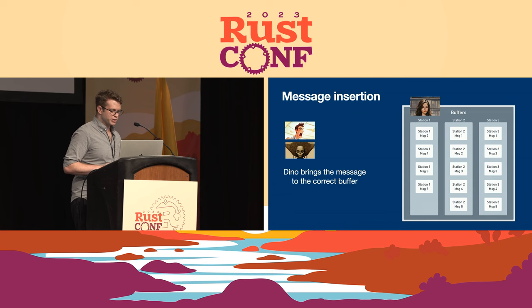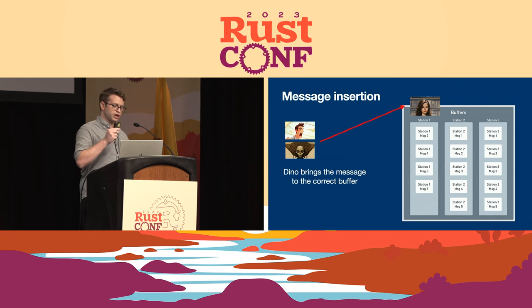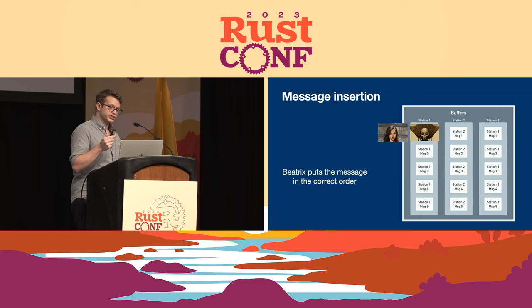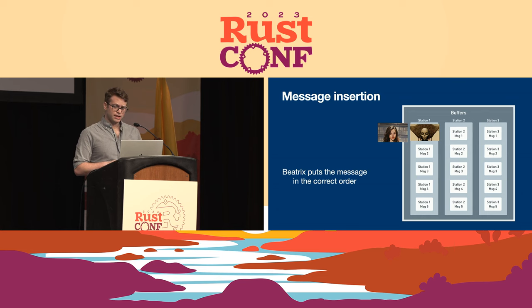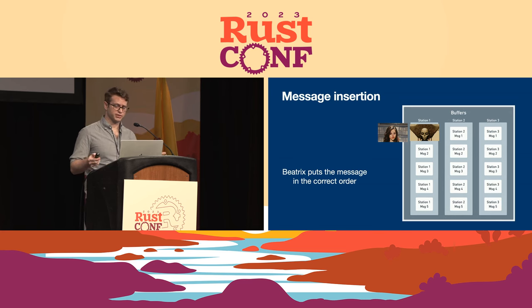The message insertion process visually: Dino has a new message and brings it over to Beatrix at the buffer for station one. There's room in that buffer, so she inserts it in the correct position in line. Beatrix will also discard any duplicate messages as they arrive if the message is already in the buffers.